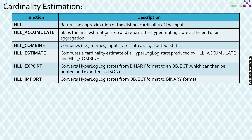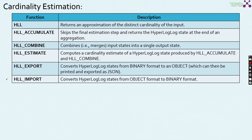HLL accumulate skips the final estimation step and returns the HLL state at the end of an aggregation. HLL combine is used to combine the input states into a single output state. HLL estimate will compute the cardinality estimate of the HLL state produced by HLL accumulate and HLL combine. HLL export converts the log states into a binary format to an object which can be printed and exported as JSON, while HLL import converts the log states from object format back to binary format — these two are complementary in nature.